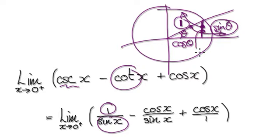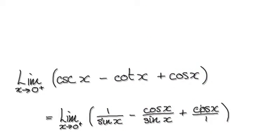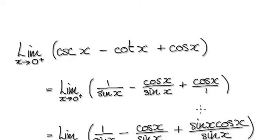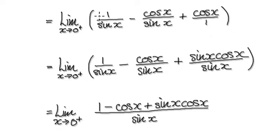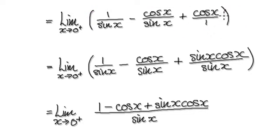Cotangent — well, tangent would be this. Cotangent would be cosine divided by sine. And then your cos — let's just rewrite it as that. So now we're here. Now just multiply top and bottom here by sine x.